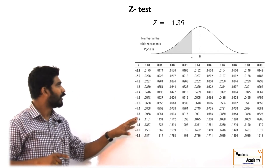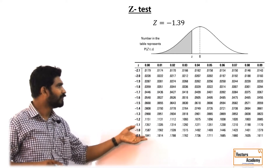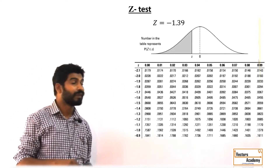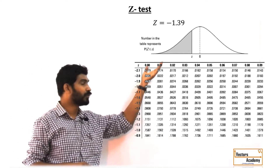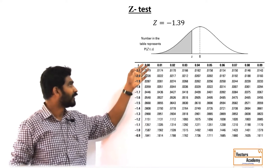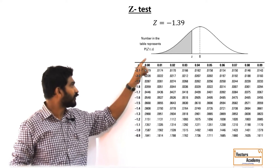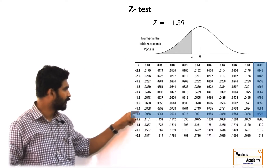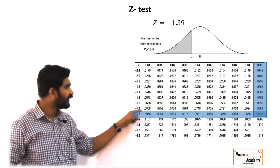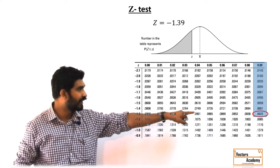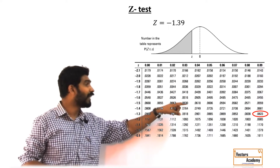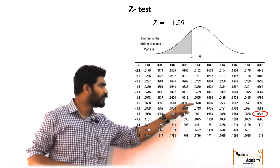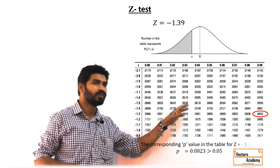If you look at this table, the Z value is negative, so we have to use the table for the below values. You can see the corresponding Z value — that is minus 1.39 — and the p-value comes out to be 0.0823.